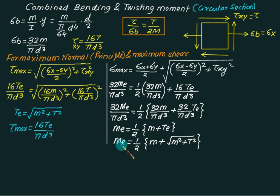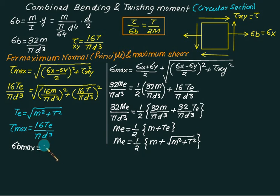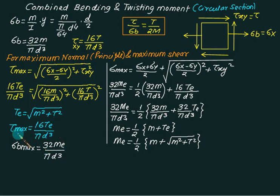So sigma_b max, called the principal stress, is 32M_e / (πd³). If you use the simple bending stress formula it gives simple bending stress; if you use the equivalent value it gives maximum bending stress. The equivalent gives the maximum.